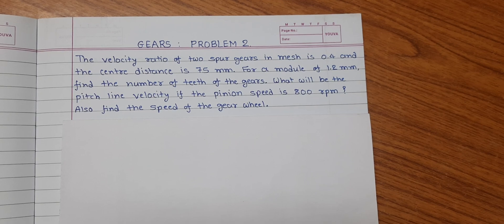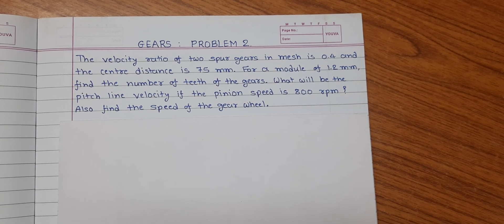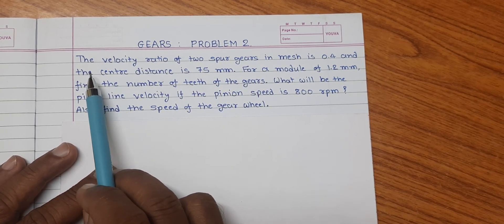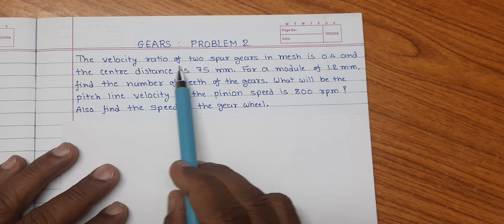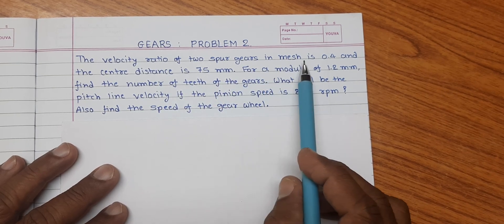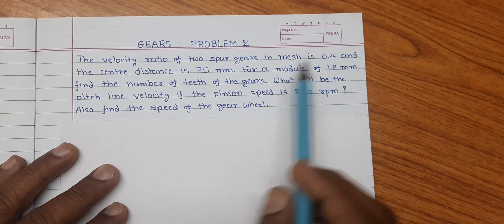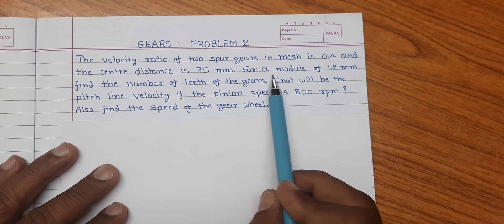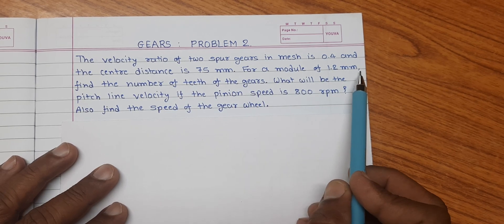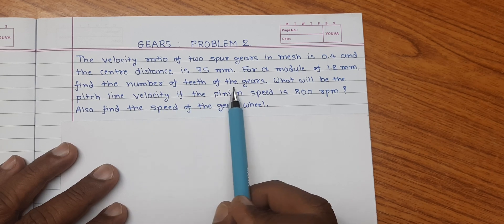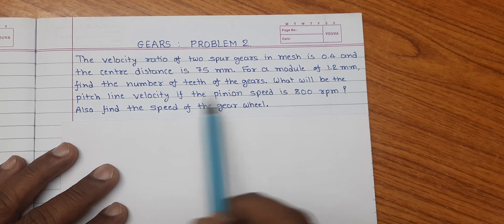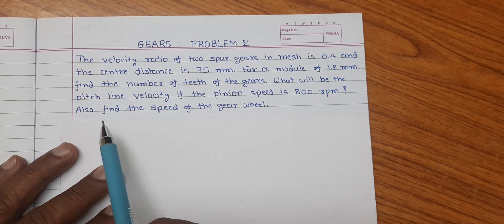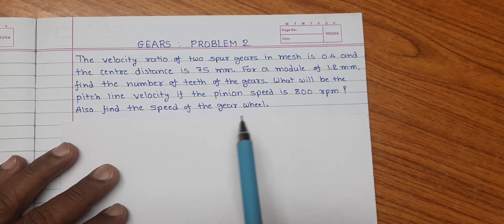Dear friends, welcome to the next problem on gears — that is problem number 2. The data is: the velocity ratio of two spur gears in mesh is 0.4 and the center distance is 75 millimeters. For a module of 1.2 millimeters, find the number of teeth of the gears. What will be the pitch line velocity if the pinion speed is 800 rpm? Also find the speed of the gear.